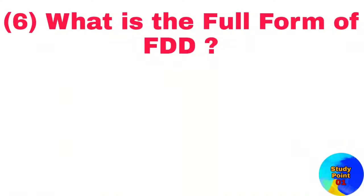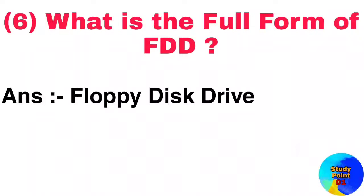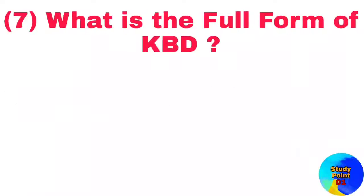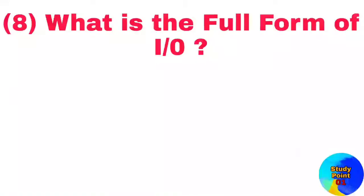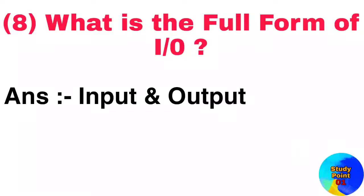Question number 6: What is the full form of FDD? Answer: Floppy disk drive. Question number 7: What is the full form of KBD? Answer: Keyboard. Question number 8: What is the full form of I/O? Answer: Input and output.